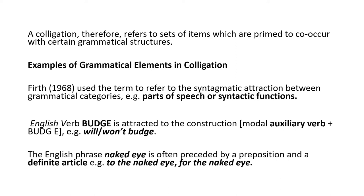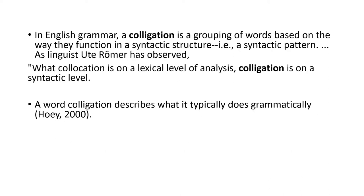For example, the English verb 'budge,' meaning 'to move,' is attracted to the construction of modal auxiliary verb plus 'budge': 'will not budge,' 'won't budge,' or 'will budge' (Sinclair). The English phrase 'naked eye' is often preceded by a preposition. In English grammar, a colligation is a grouping of words based on how they function in a syntactic or grammatical pattern.